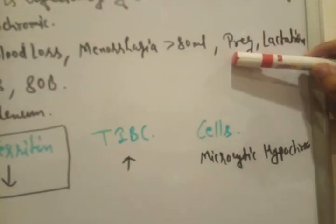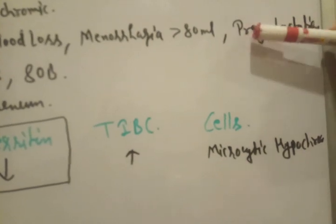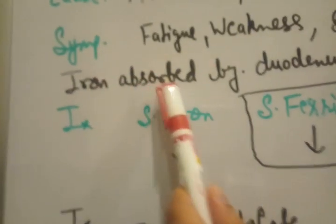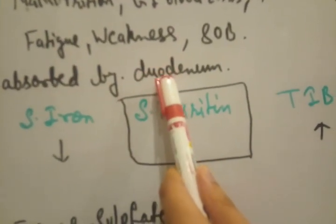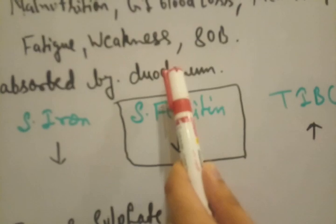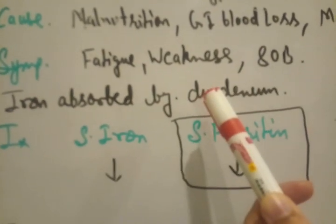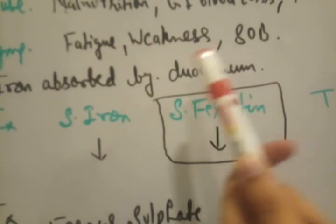In case of gastritis also, there is iron deficiency. Why there is iron deficiency in case of gastritis? Because iron is absorbed by duodenum. In case of duodenal ulcer, there is deficiency of iron, because absorption of iron by duodenum. And if there is ulcer in duodenum, it's not functional, no iron absorption, severe deficiency of iron.